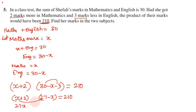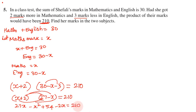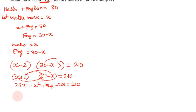Expanding: x into 27 is 27x, x into minus x is minus x squared, 2 into 27 is 54, 2 into minus x is minus 2x, which equals 210. Simplifying: minus x squared, 27x minus 2x gives 25x, plus 54 equals 210.